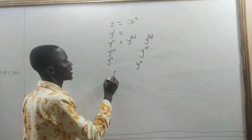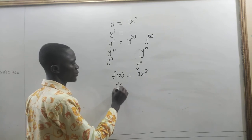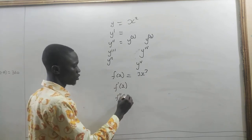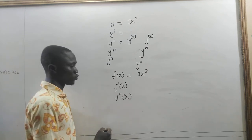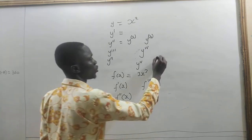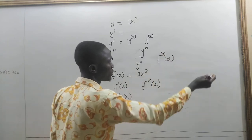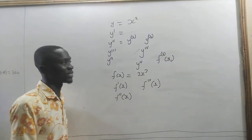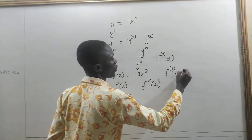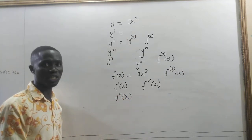If we have f(x) equal to, say, 3x, then we can write f'(x) which means differentiate it once, f''(x) means differentiate it twice, f'''(x) means differentiate it three times, and f^(iv)(x) means differentiate it four times. This is for Lagrange's notation.